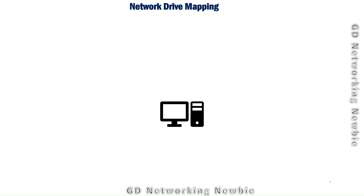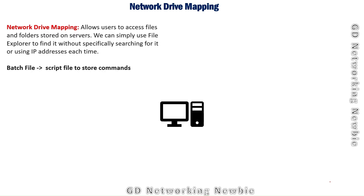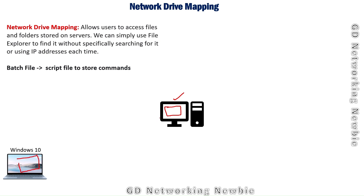In this video I'm going to demonstrate how to achieve network drive mapping. Network drive mapping allows users to access files and folders stored on a server. On the server we can have certain folders, and if we share these folders they can be visible on client machines. Users with specific privileges can log in and see this folder - you don't need to use any IP address, you can simply use File Explorer to find it.